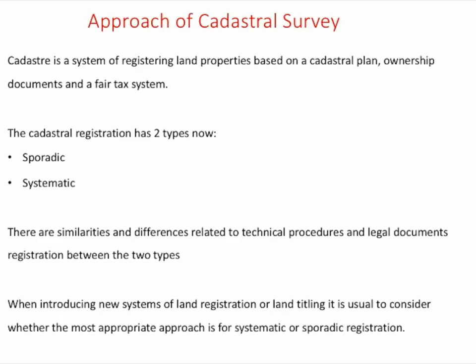Cadastral is a system of registering land properties based on cadastral map, ownership document, and fair taxation. The cadastral registration system has two types: sporadic and systematic. They are similar as well as different in relation to their technical procedure, legal document, and registration. When introducing a new system of land registration or land titling, it should be considered which is appropriate — whether sporadic or systematic.